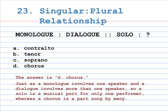Number 23: singular is to plural relationship. Monologue is to dialogue, as solo is to A. Contralto, B. Tenor, C. Soprano, D. Chorus. The answer is D, Chorus. Just as a monologue involves one speaker and a dialogue involves more than one speaker, so a solo is a musical part for only one performer, whereas a chorus is a part sung by many.